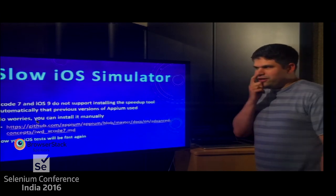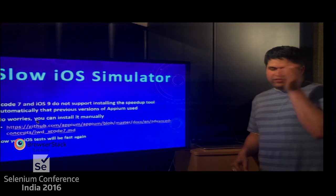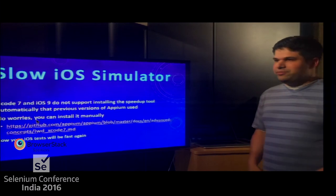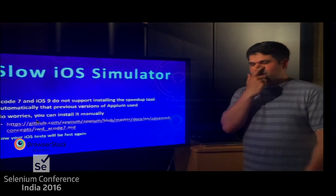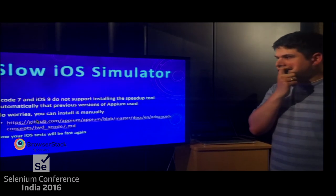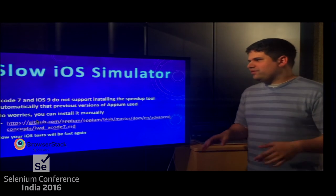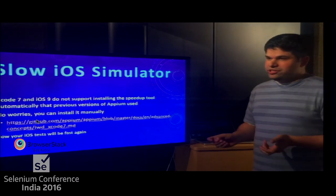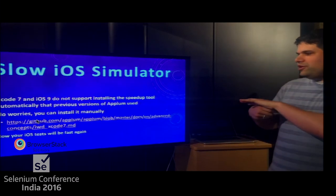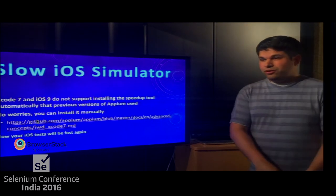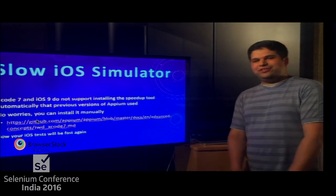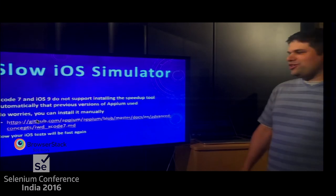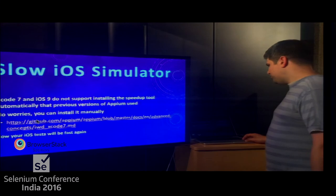Another common complaint is that the iOS simulator is slow. In previous versions of Appium we bundled a product called Instruments Without Delay, created by people at Facebook, which would method-swizzle out a slow method in UI Automation JavaScript that Appium uses heavily. Unfortunately, with Xcode 7 and iOS 9, we're no longer able to do that automatically. But there are directions for doing it manually — you just check out a GitHub repository, run a shell script, and everything is as it was before. You can still get fast tests; we just can't do it automatically anymore.